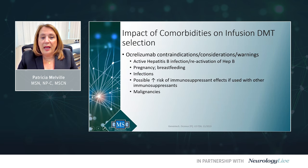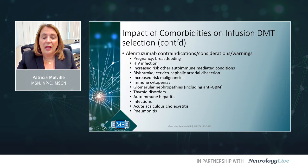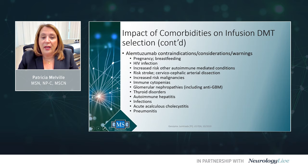For infusion DMTs: Ocrelizumab is contraindicated in patients with active hepatitis B infection due to concerns about reactivation, and in pregnant or breastfeeding women. Infections are a risk, as is possible increased immunosuppressant effects if used with other immunosuppressants, and malignancies. Alemtuzumab is contraindicated in pregnancy, breastfeeding, and HIV infection. It carries risks of increased autoimmune-mediated conditions, stroke or arterial dissections, malignancies, immune cytopenias, glomerulonephropathies, thyroid disorders, autoimmune hepatitis, infections, acute cholecystitis, and pneumonitis.